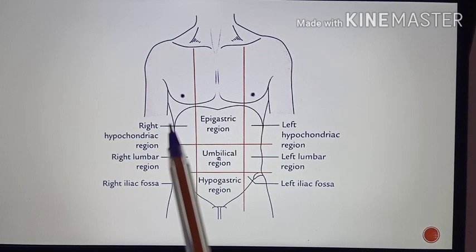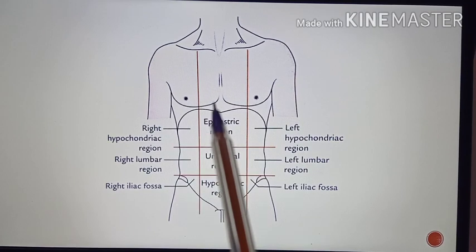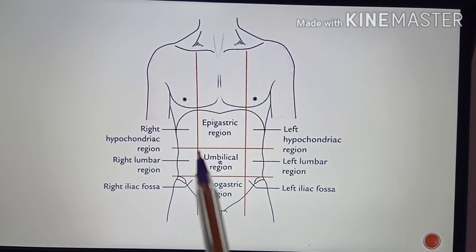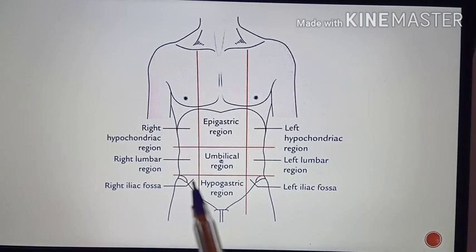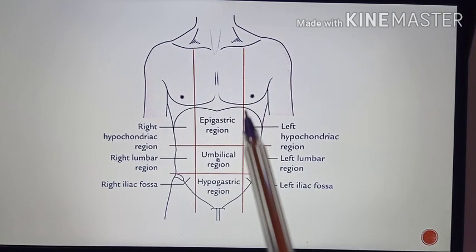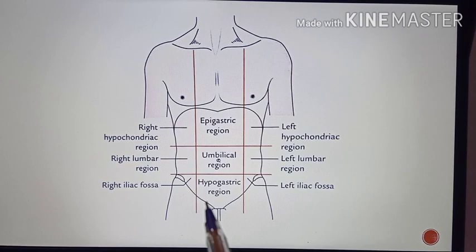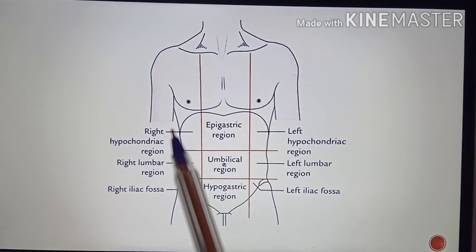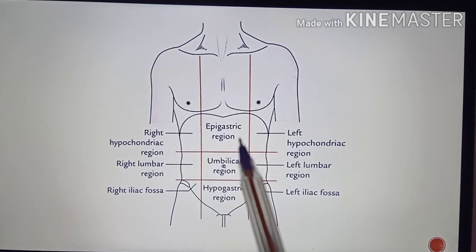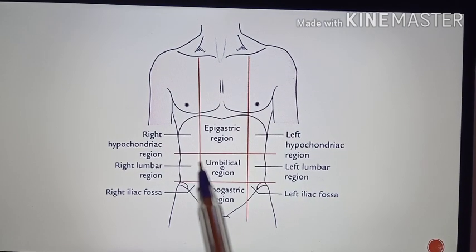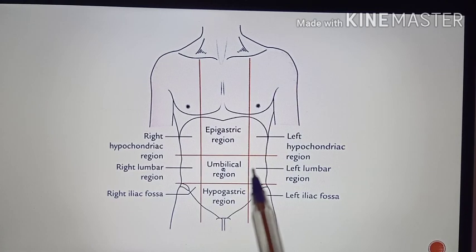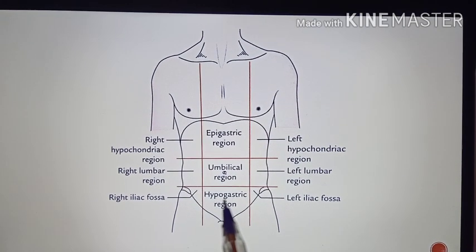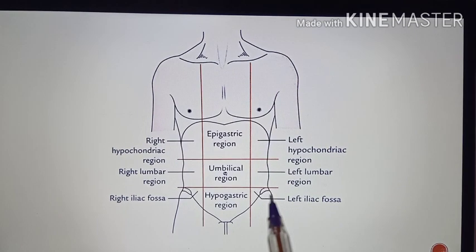In this picture you can see all nine regions. The planes are: the transpyloric plane, the transtubercular plane, and two vertical midclavicular planes. The regions are: right hypochondrium, epigastrium, left hypochondrium, right lumbar, umbilical, left lumbar, right iliac fossa, hypogastrium, and left iliac region.